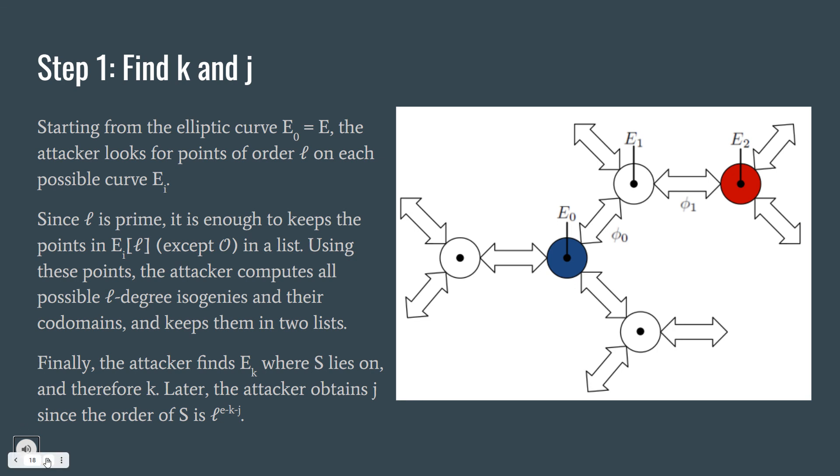In the picture on the right, we start with E0, and all the possible arrows are mapped to other curves, and one of them is E1. And then we apply the same for E1, and we find E2. At some point, which is Ek, this Ek will be the elliptic curve where S is lying on.